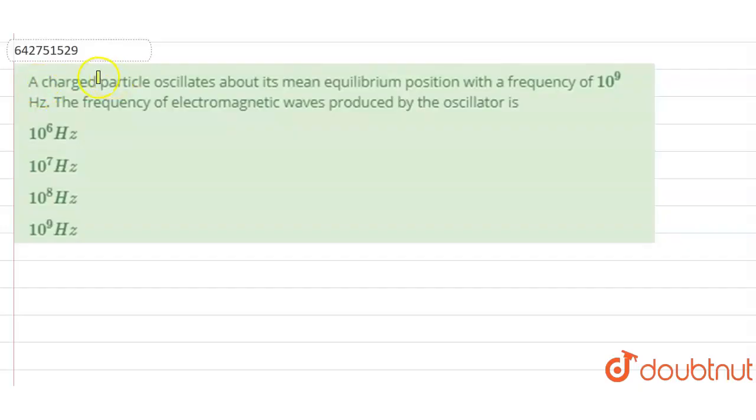The question asks: a charged particle oscillates about a mean equilibrium position with a frequency of 10 to the power 9 Hertz. So the frequency of electromagnetic wave produced by this oscillator is... The options given here are 10 to the power 6 Hertz, 10 to the power 7 Hertz, 10 to the power 8 Hertz, 10 to the power 9 Hertz.